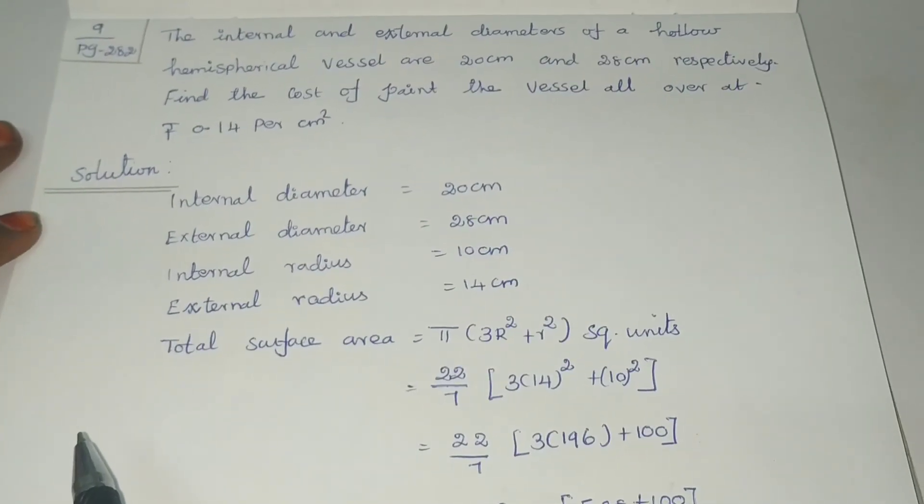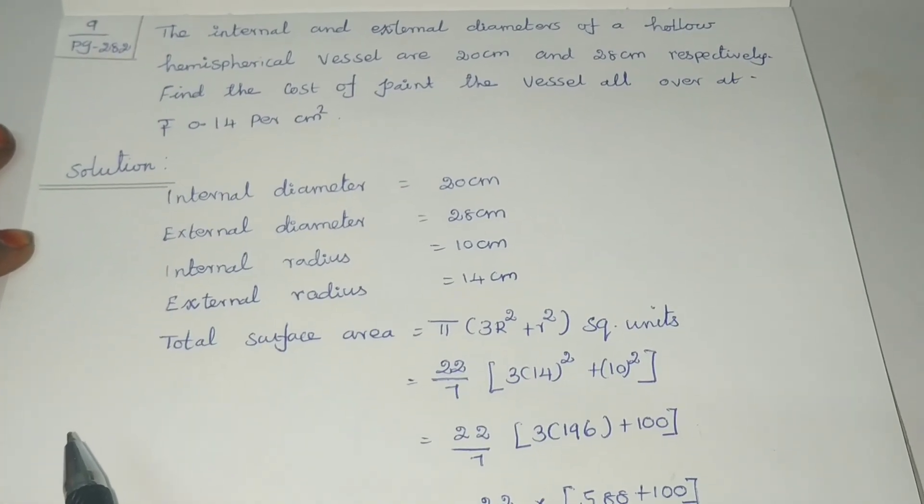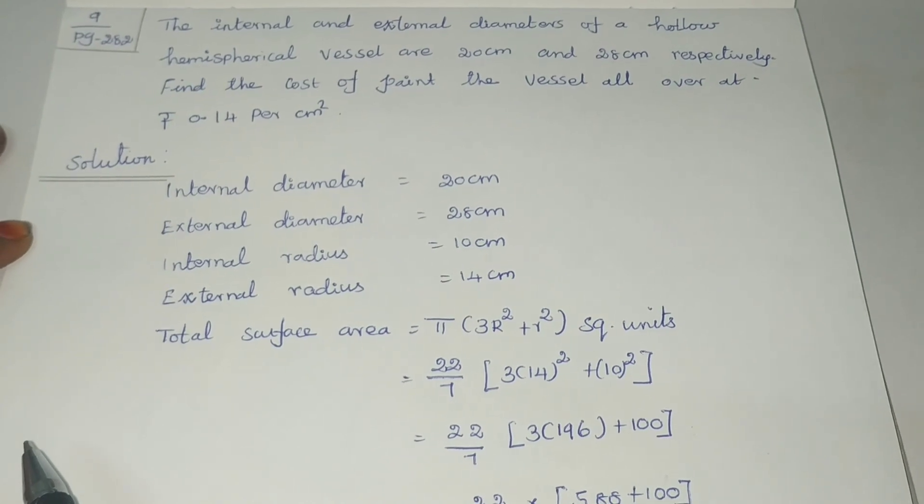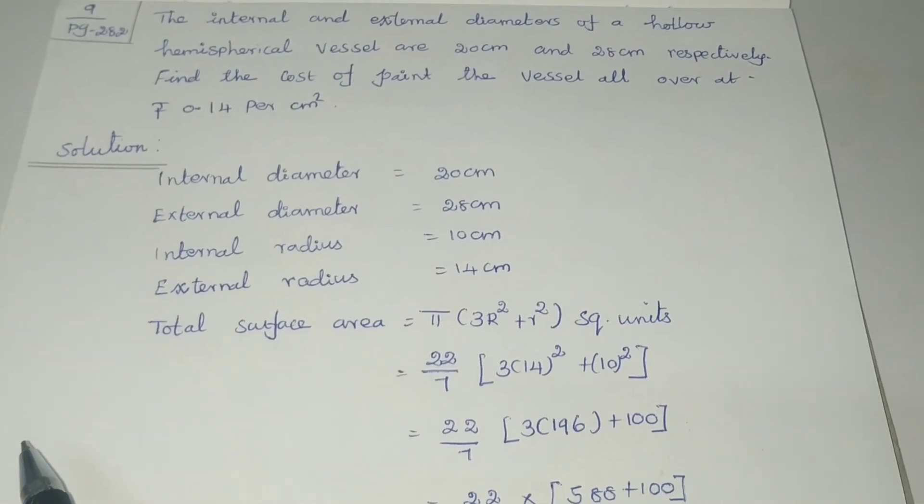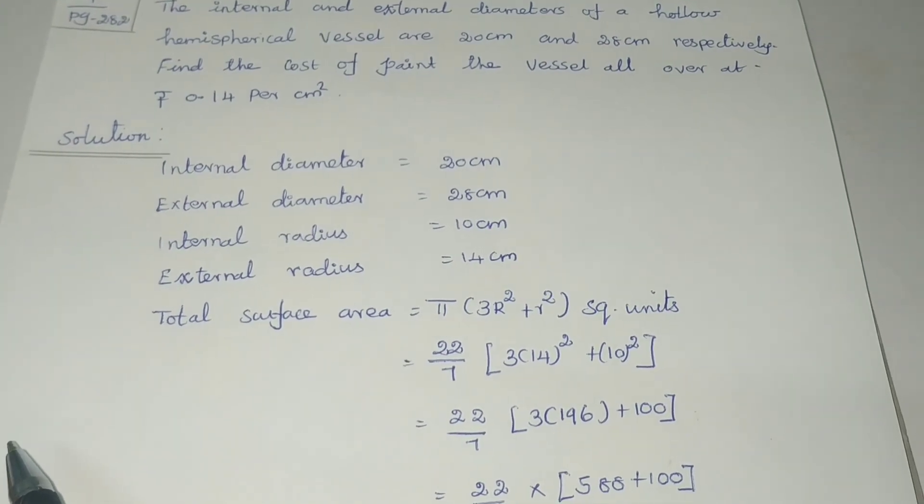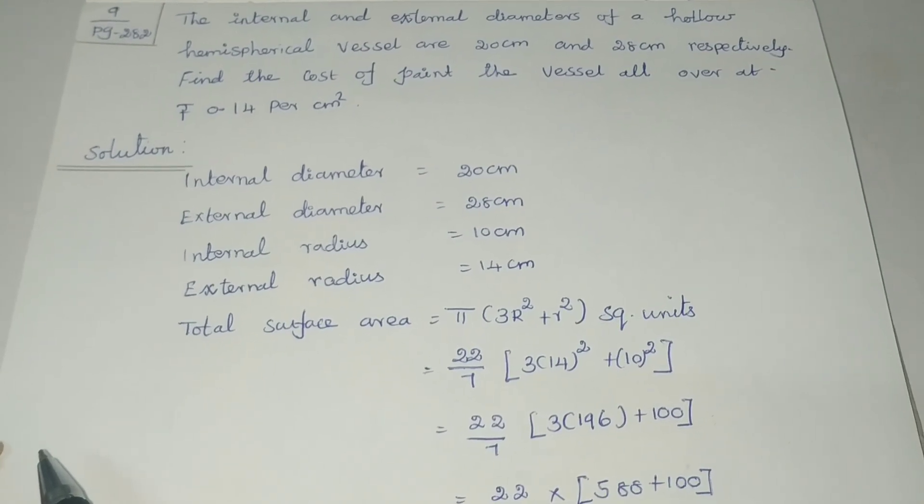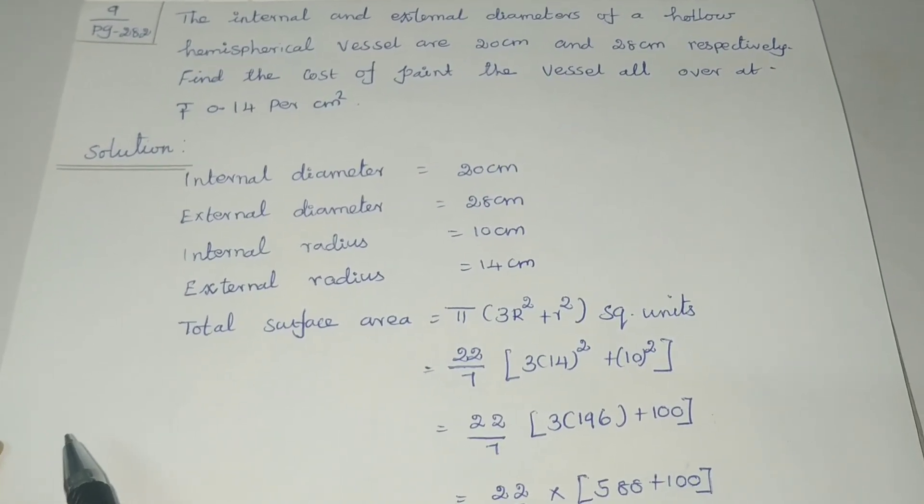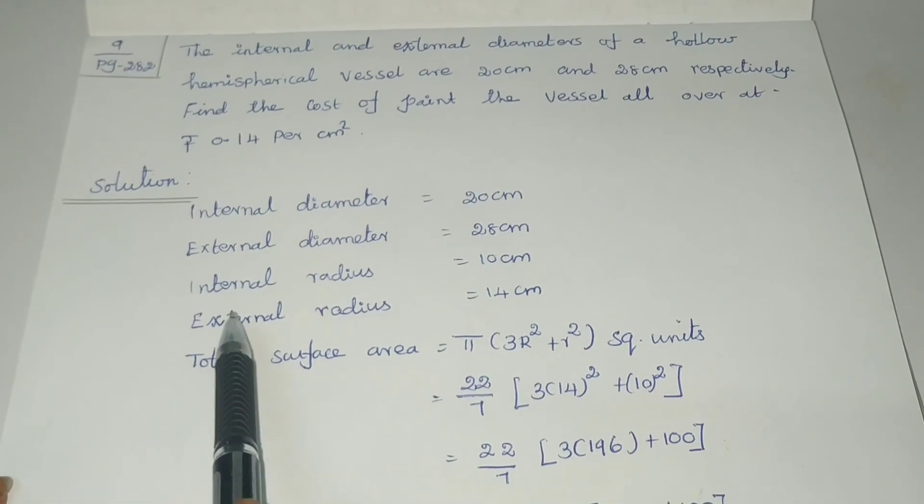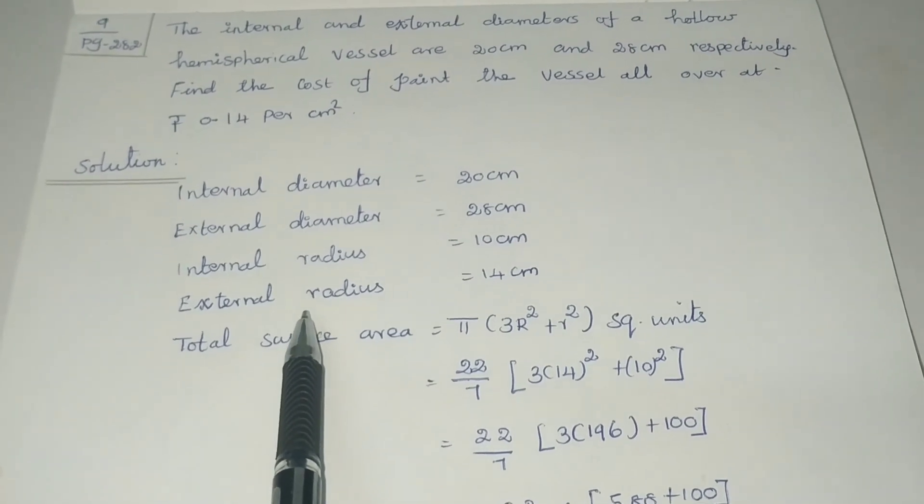Next, question 9, page number 282. The internal and external diameter of a hollow hemispherical vessel are 20 cm and 28 cm respectively. Find the cost of painting the vessel all over at Rs. 14 per cm². The solution: internal diameter is 20, external diameter is 28.